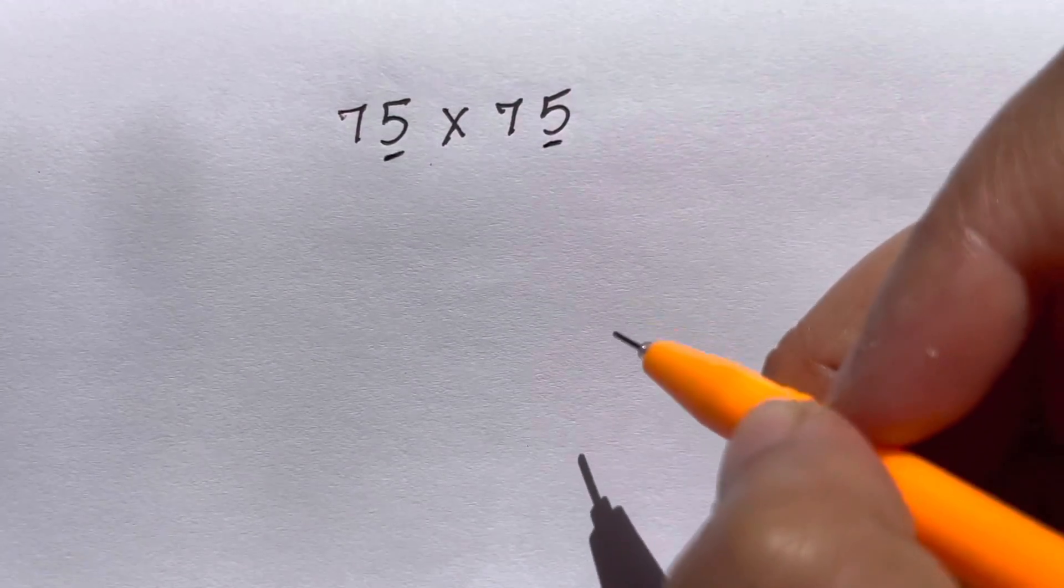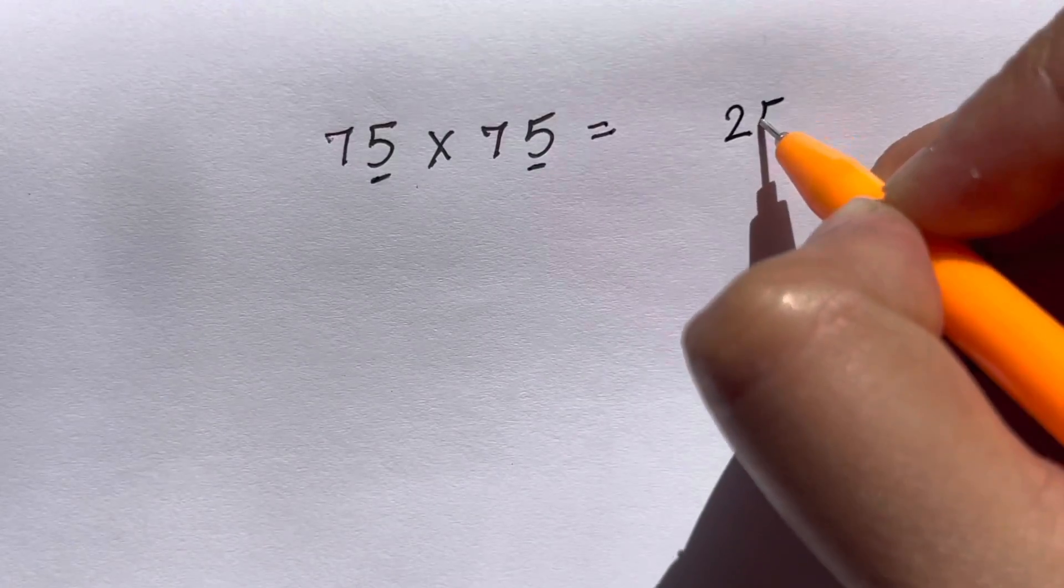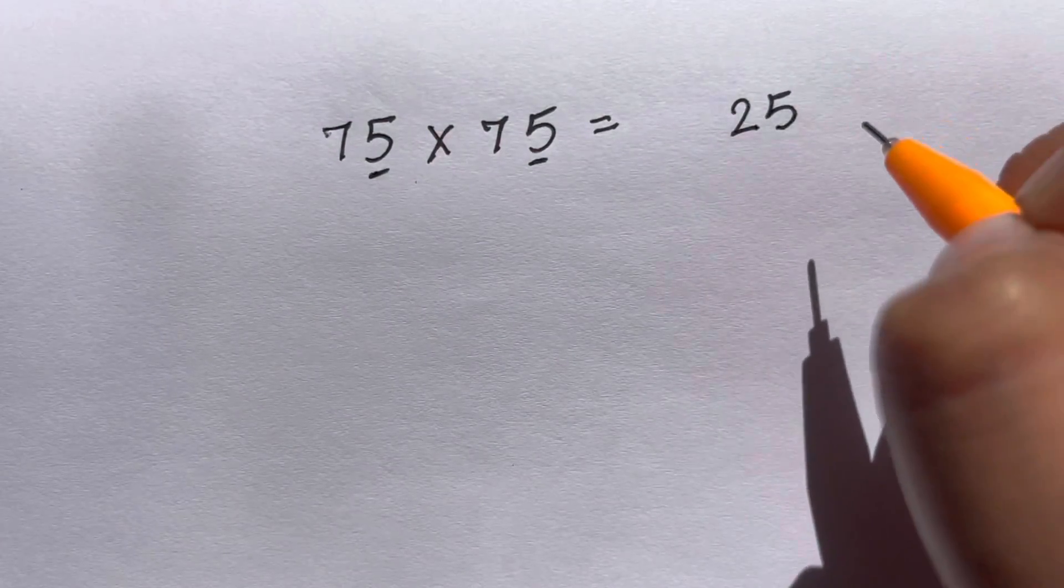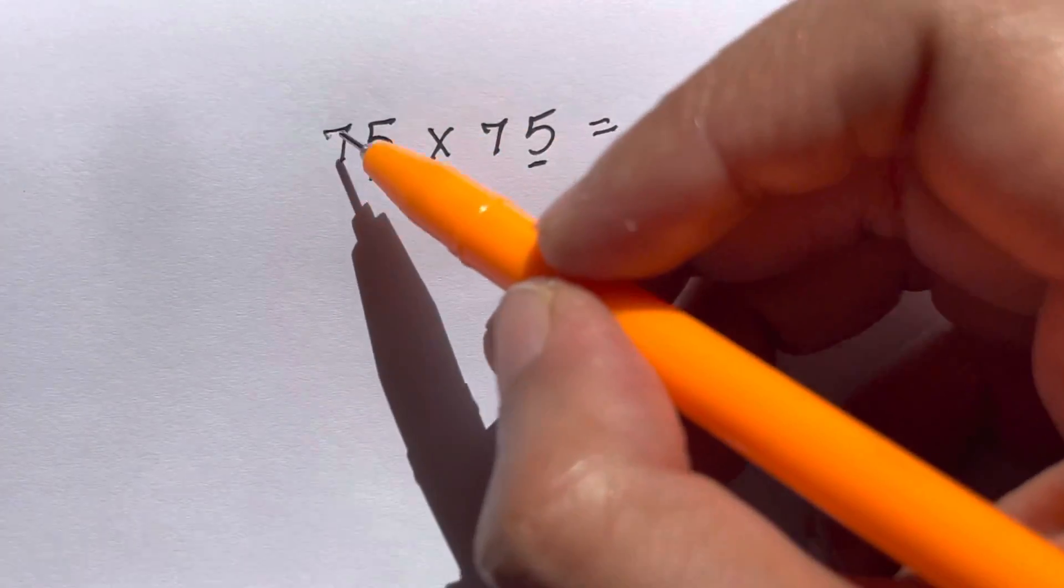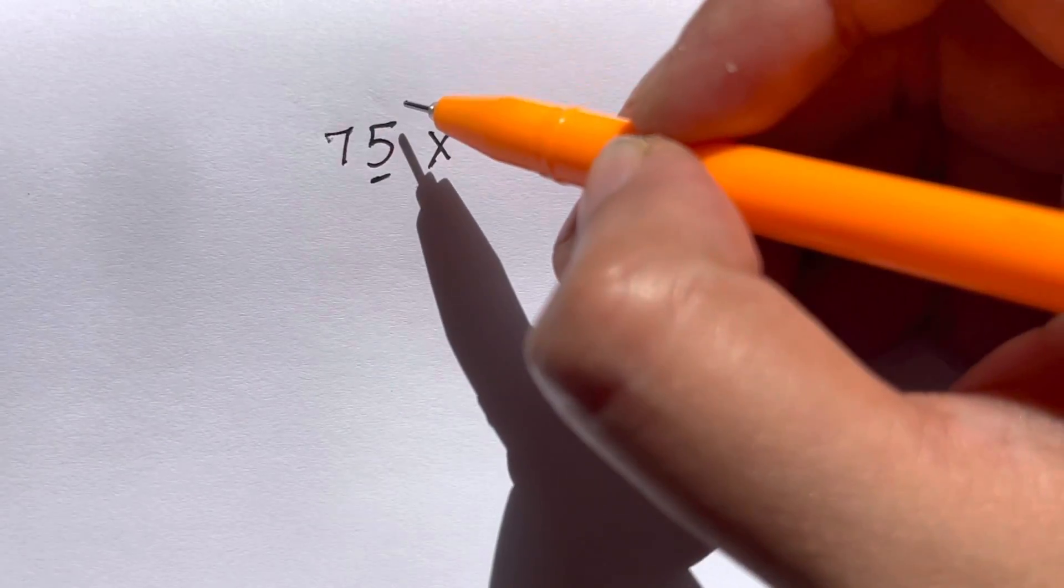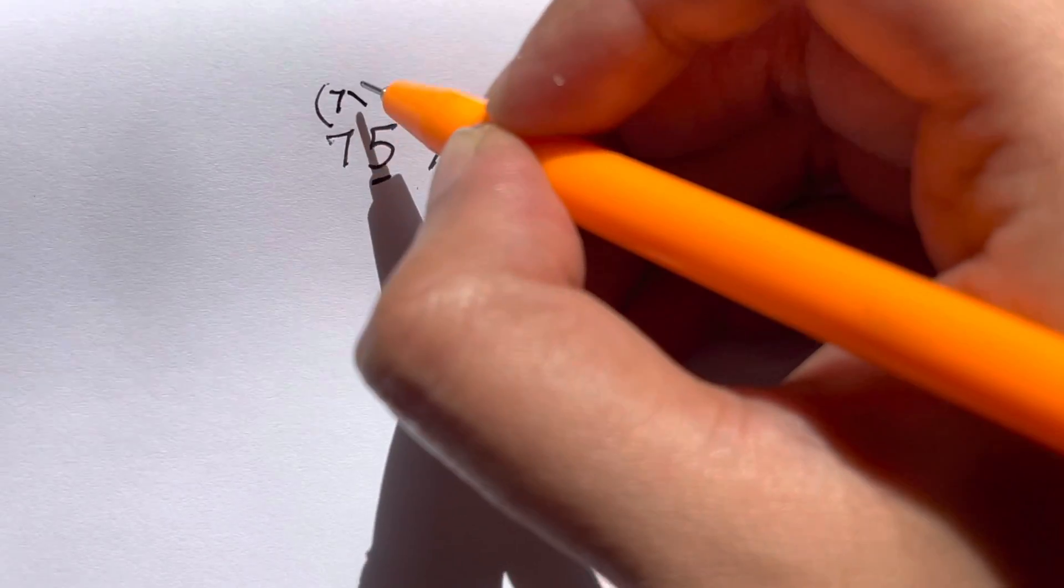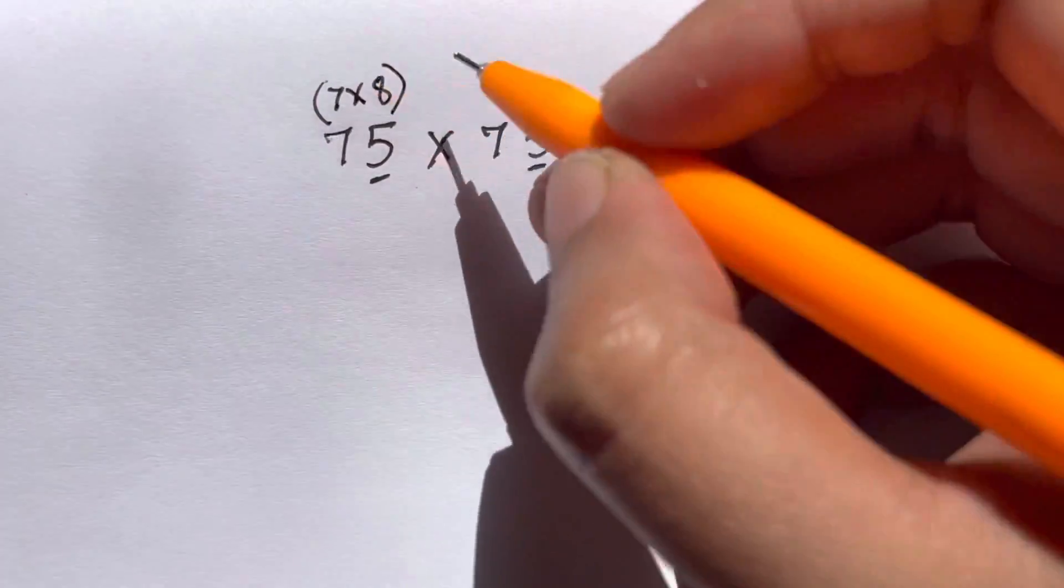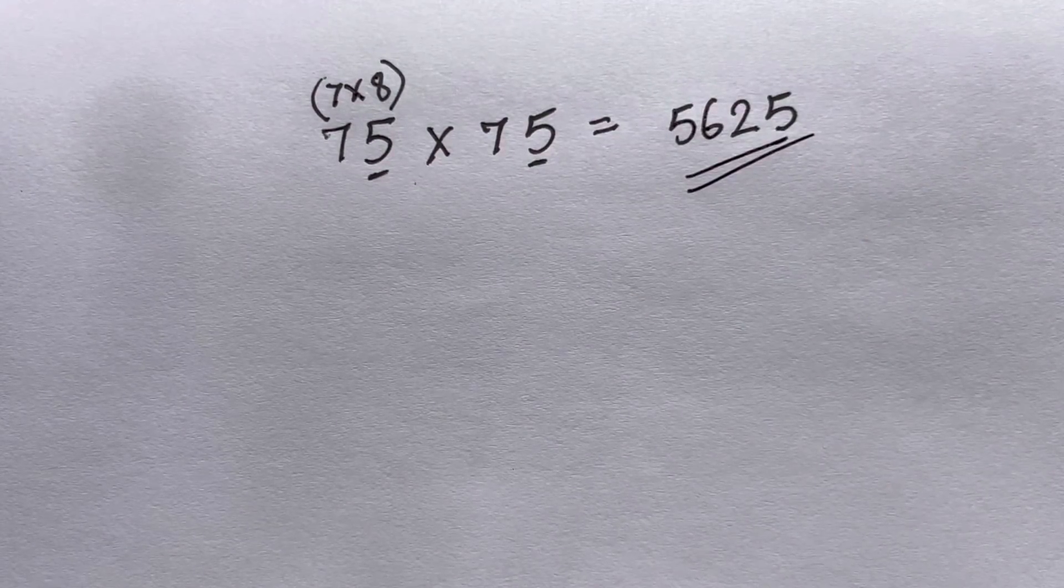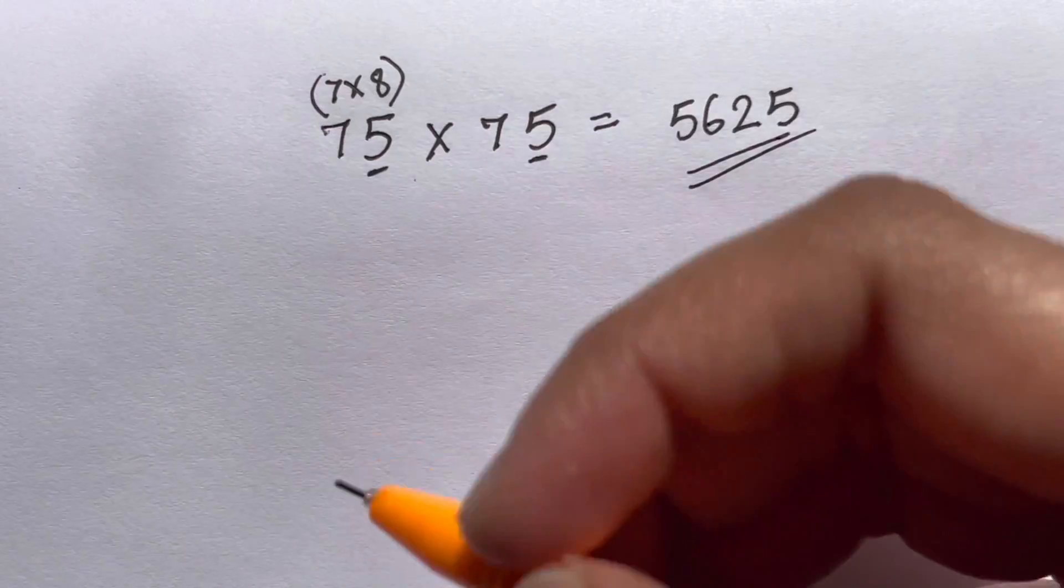For 75 times 75, whenever you have numbers ending in 5, this is a very easy trick. All you have to do is multiply 5 times 5, which is 25—you'll always write the ending numbers as 25. Now you don't have to multiply 7 times 7. You just check what number comes after 7—that's 8. So you do 7 times 8, which is 56, and that is your answer: 5625. Isn't it amazing? You got it in one step, in your mind.